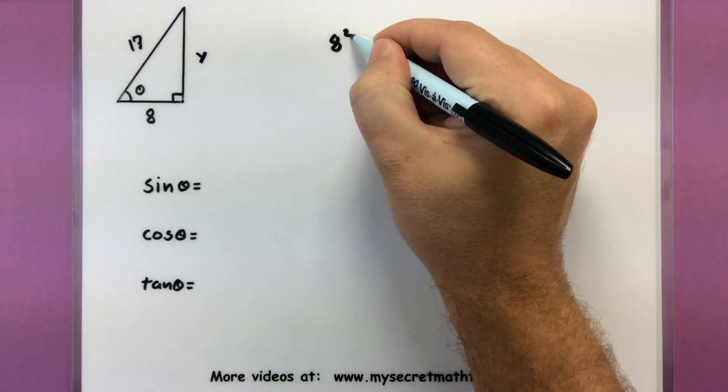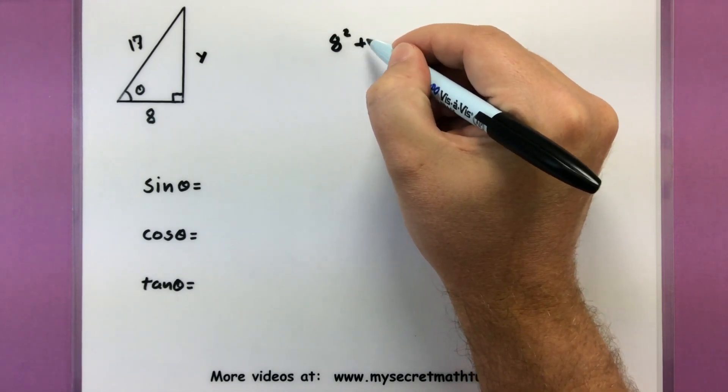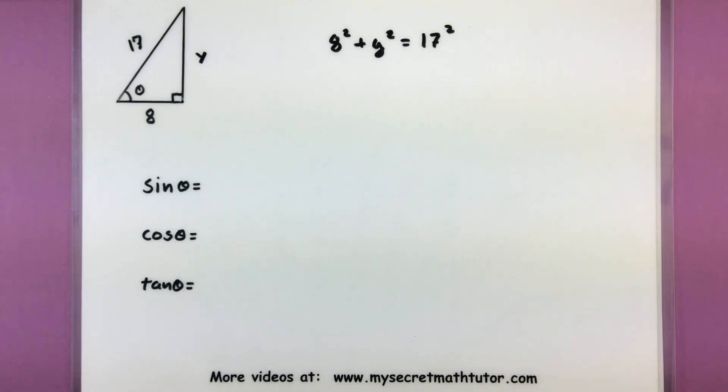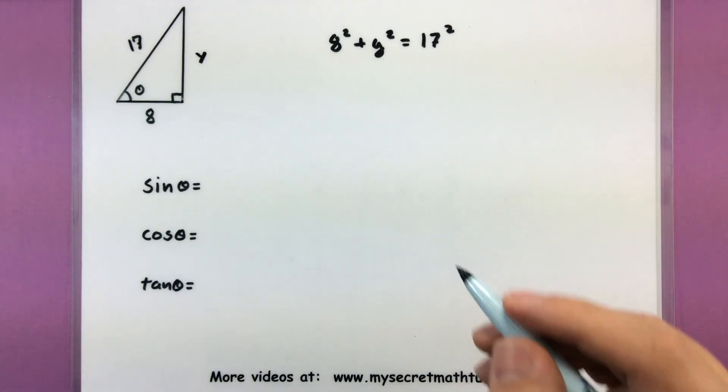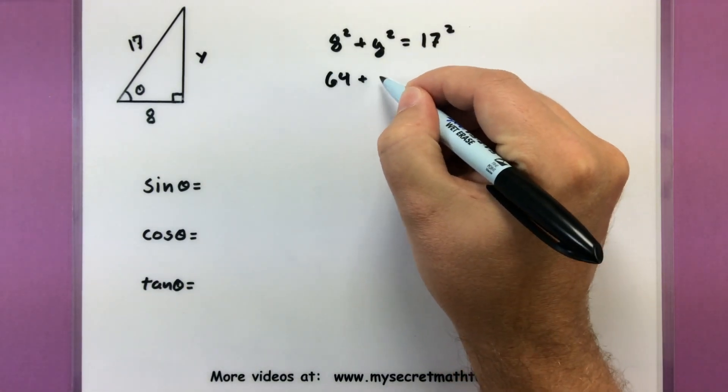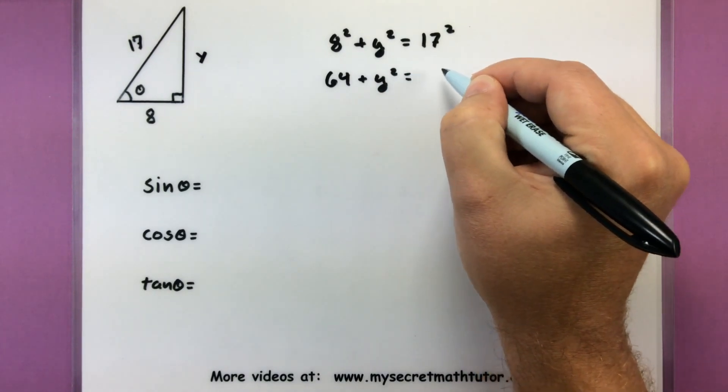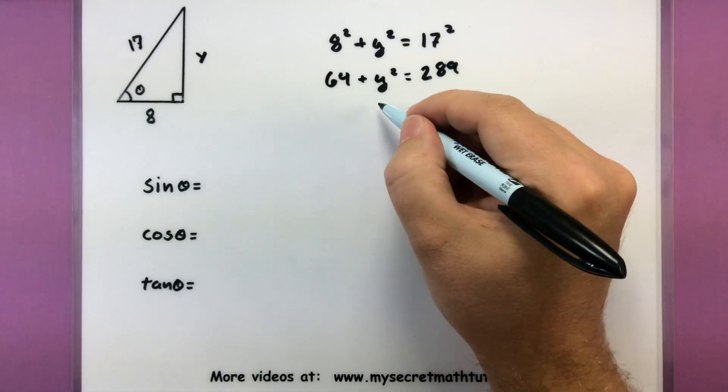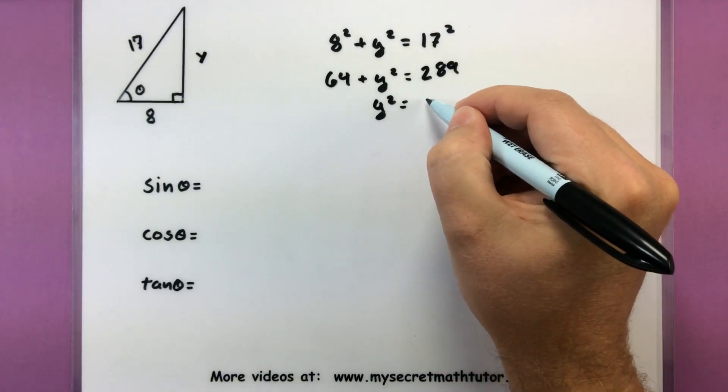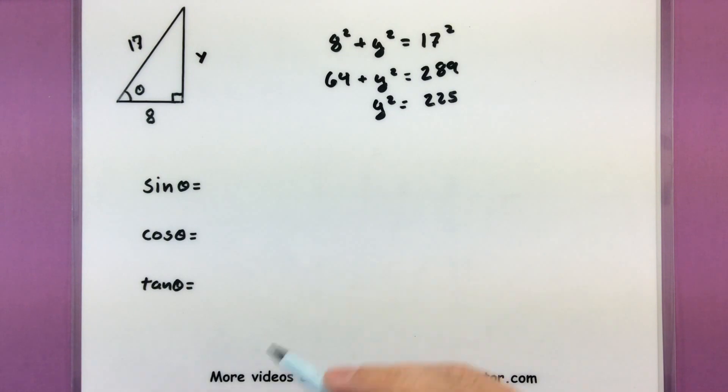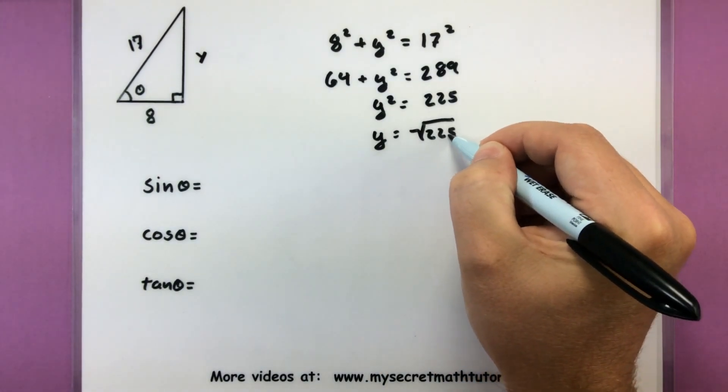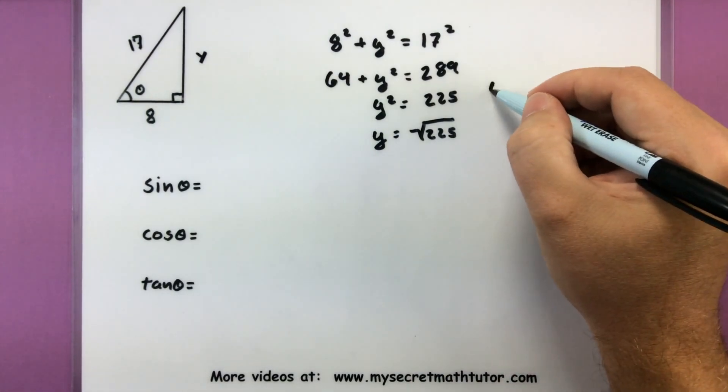So I'm thinking eight squared plus Y squared equals seventeen squared. Now as soon as we solve this for Y, we'll have all the values we need for our trigonometric functions. Eight squared is sixty-four. Y squared, seventeen squared is two hundred and eighty-nine. We're going to subtract sixty-four from both sides. So Y squared equals two hundred and twenty-five. Take the square root of both sides. Looks like I have that Y is equal to fifteen.